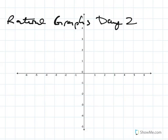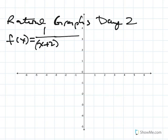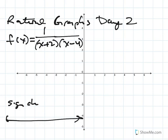Rational graphs can get more complicated. An example we can look at is 1 over — we saw this before in a lesson video. What if I throw in another factor in the denominator? First I'm going to make a sign chart. In this case, the critical values of 4 and negative 2 are both places where the function is undefined.